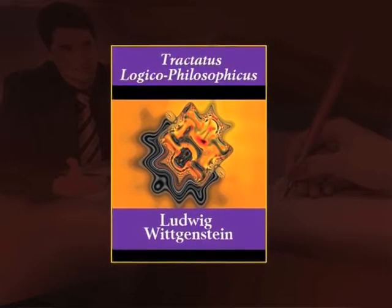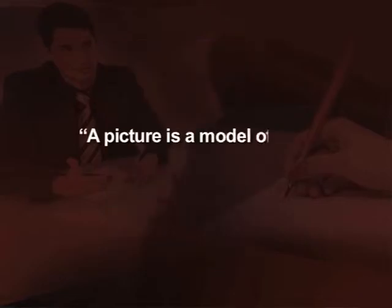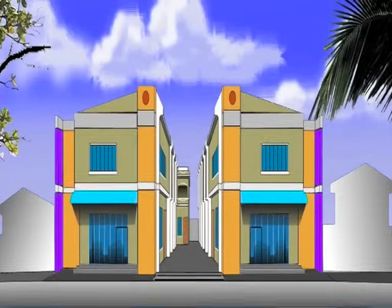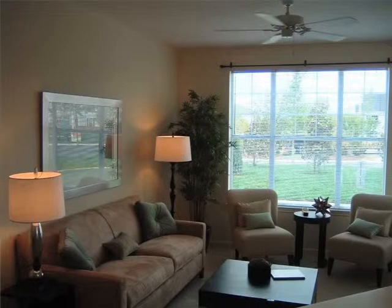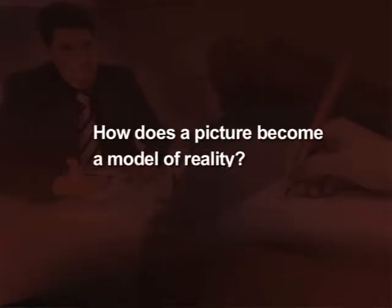A picture is a model of reality. This is a statement from Wittgenstein's book — in fact, his first book, Tractatus Logico-Philosophicus. A model is a representation of an object; how we represent an object is what a model is all about. For example, a model apartment has the salient features of an apartment irrespective of how different other apartments might be. How does a picture become a model of reality? That is what the question is all about.